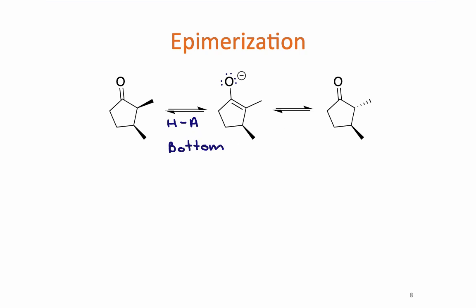Starting on the right and looking at the center, at that more stable thermodynamic enolate — we had originally started with the two methyl groups cis to form that enolate under thermodynamic conditions. Two things can happen. The first possibility is protonation from the bottom side of the molecule: if the lone pair on the oxygen comes down and grabs the proton, that proton is coming in from the bottom side, and that would give us the starting material.